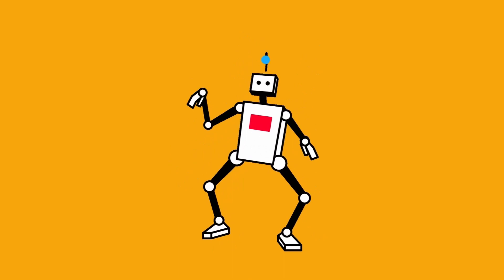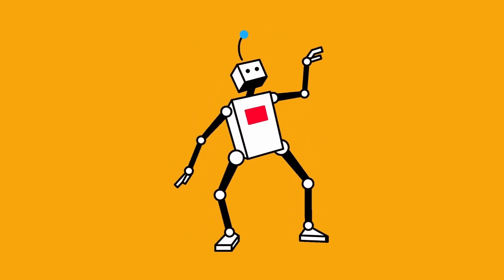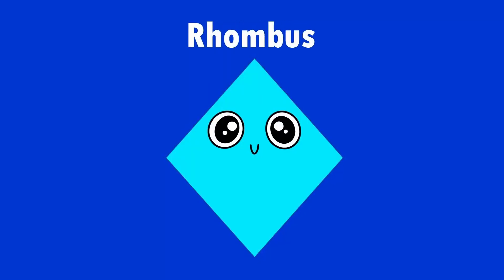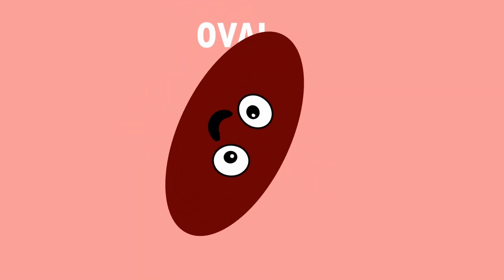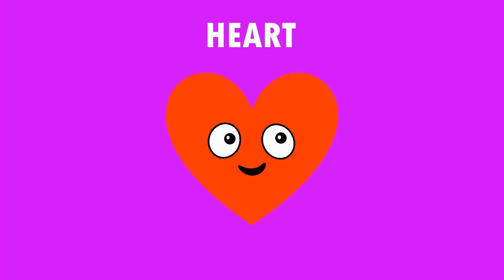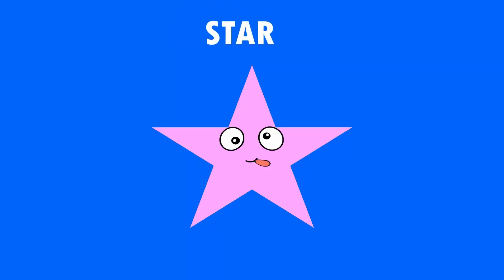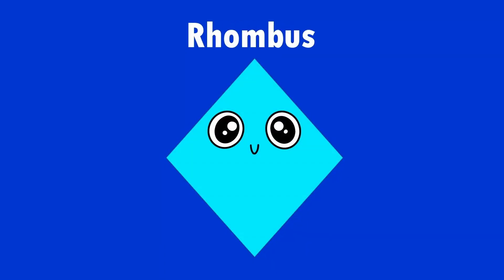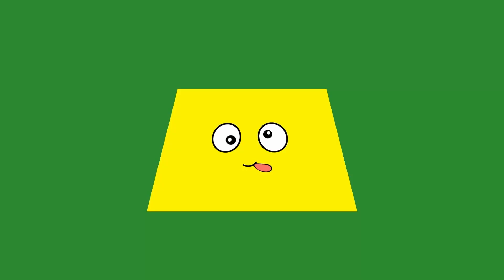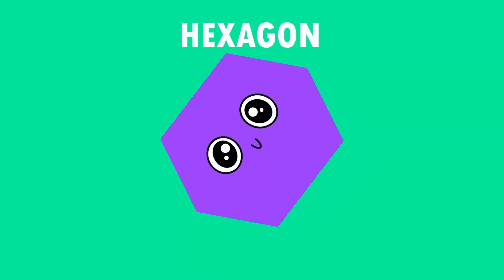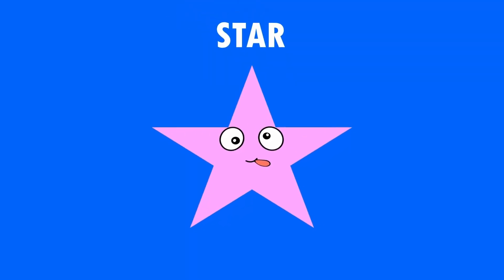Let's dance with him. Now let's name more shapes. Rhombus. Oval. Trapezoid. Heart. Hexagon. Star. Now it's your turn. Name these shapes. Rhombus. Trapezoid. Heart. Hexagon. Star.